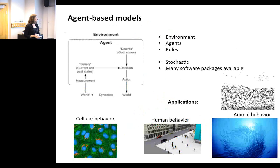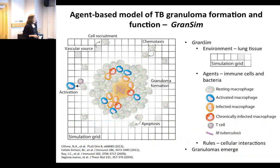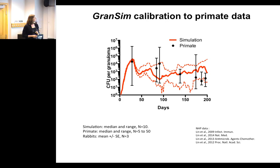This is our agent-based model, which we call GRANDSim — granuloma simulation. The environment represents lung tissue as a square two-dimensional grid where agents move and interact. Our agents include different immune cells: macrophages in various stages of infection and activation, T cells, and the bacteria. The rules are cellular interactions based in biology and in vitro data. We seed the simulation grid with a single infected macrophage in the center, let the simulation run on its own, and let the granuloma evolve as an emergent behavior. We also calibrate to non-human primate data, using collaborators' measurements of CFU per granuloma.